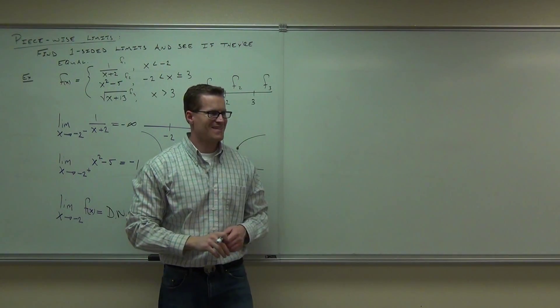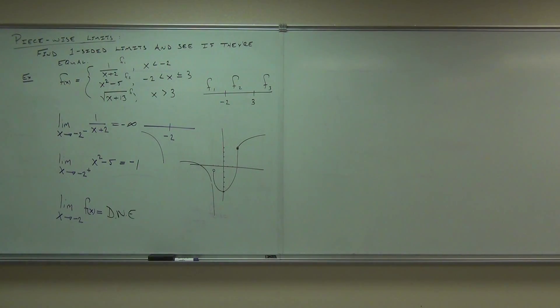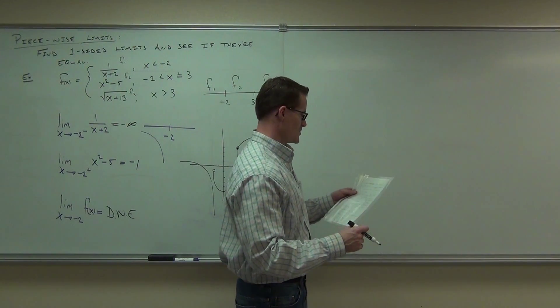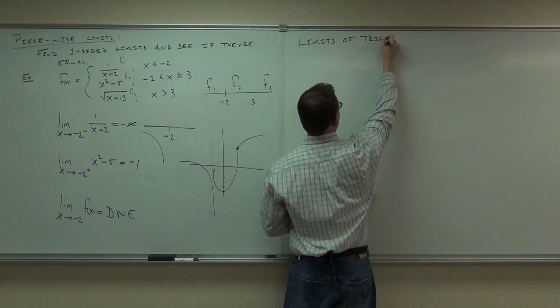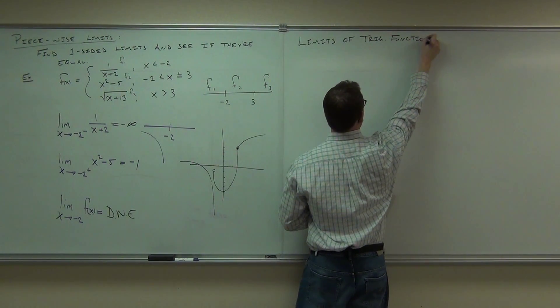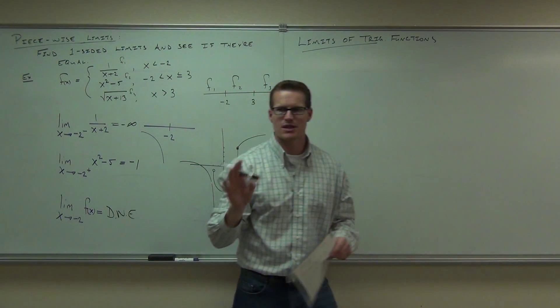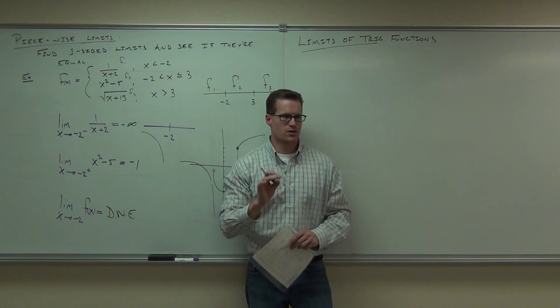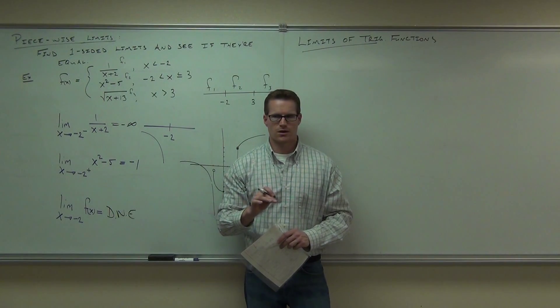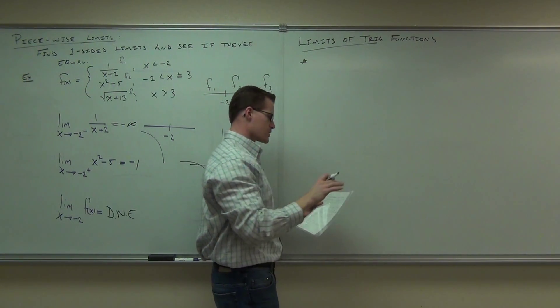Are you ready for some trigonometry? I know it's supposed to be trigonometry Tuesday, but we're a day early. Limits of trig functions. There's a couple things you have to buy in on for me to do this properly. And the first thing you've got to buy in on is that sine and cosine are continuous everywhere. Continuous means you can draw it without lifting your pencil off the paper. So first thing, this is going to come up later in our class, but I want to say it now. Sine and cosine are continuous everywhere.